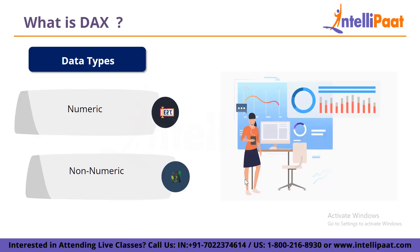Now let us discuss the data types in DAX. Basically there are two primary data types in Power BI. The first one is numeric and the second one is non-numeric. Numeric data type includes decimal, currency values, integers, etc. Whereas non-numeric data type consists of strings, binary objects and many more. I hope you have got a basic idea regarding the data types used in Power BI DAX functions.